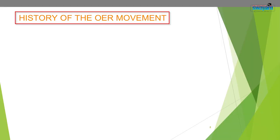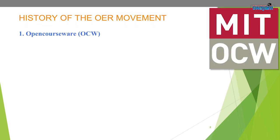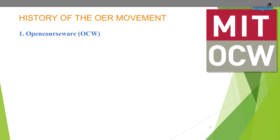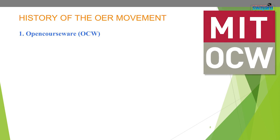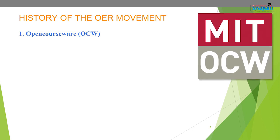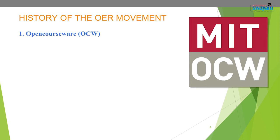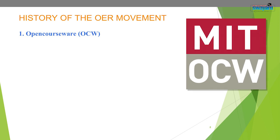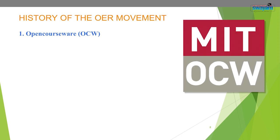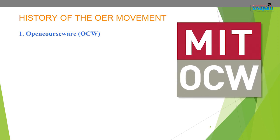The OER movement is comprised of four main categories. The first is OpenCourseWare, which is a digital publication of high quality educational materials that are freely and openly licensed and are available online to anyone, anytime.